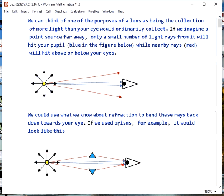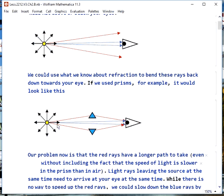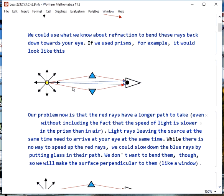If we used refraction to bend some rays back down towards your eye, we could put prisms here and redirect this light. The problem is this light that takes the red path has to go a longer distance and it's being slowed down by the glass. We don't have any way to speed up the light that takes the long path, but we can slow down the light that takes the shorter path. We can slow it down by putting glass in its way. We want it to be flat on the sides so that we don't bend it, so it's essentially a window here in the center.